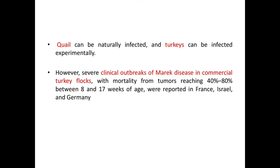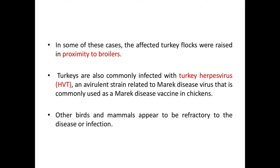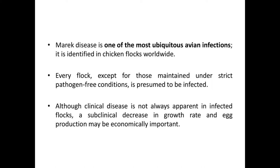Quail can be naturally infected and turkeys can be infected experimentally. However, severe clinical outbreaks of Marek's disease in commercial turkey flocks, with mortality from tumors reaching 40 to 80 percent between 8 and 17 weeks of age, were reported in France, Israel, and Germany. In some of these cases, the affected turkey flocks were raised in proximity to broilers. Turkeys are also commonly infected with turkey herpesvirus, or HVT, an avirulent strain related to Marek's disease virus that is commonly used as an MDV vaccine in chickens. Other birds and mammals appear to be refractory to the disease or infection.